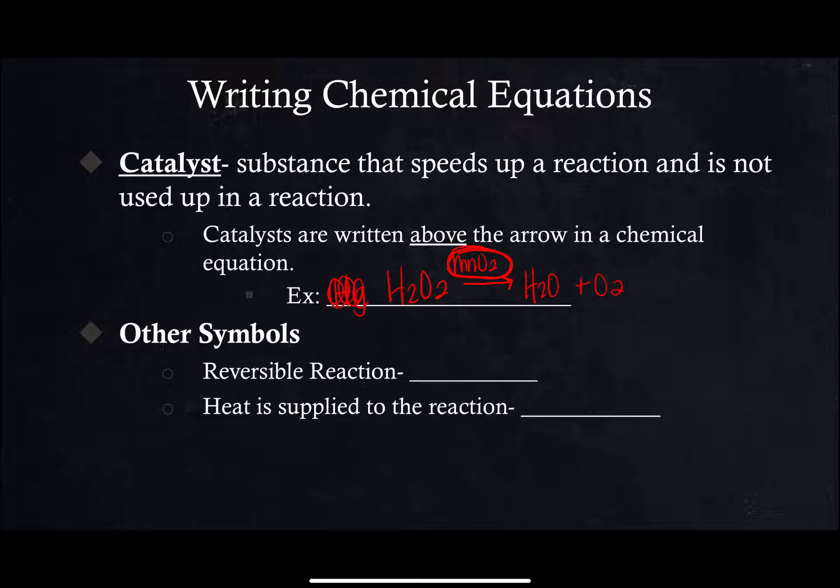What is a catalyst? A catalyst is something that speeds up a reaction, it makes it happen faster.